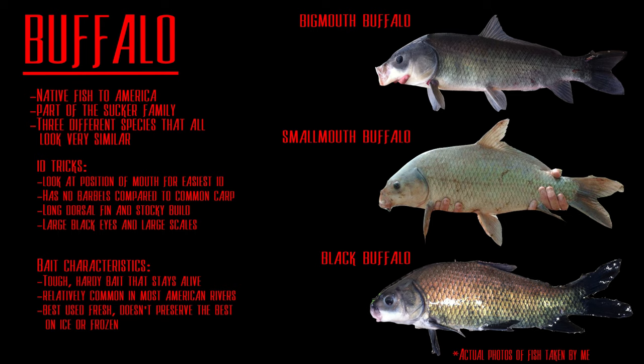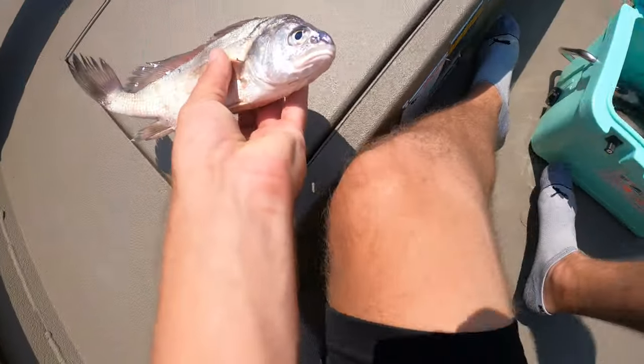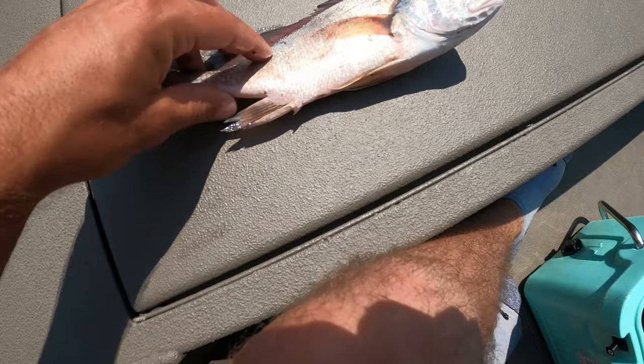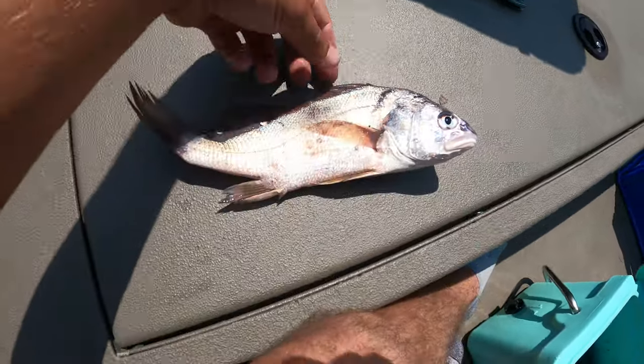The difference between smallmouth buffalo, bigmouth buffalo, and black buffalo is very subtle. The easiest way is to go by the mouth: the smallmouth buffalo has a mouth angled down, the bigmouth buffalo has one angled straight forward, and the black buffalo is kind of in between. They look very similar to one another, but overall buffalo have this kind of shape and characteristics.